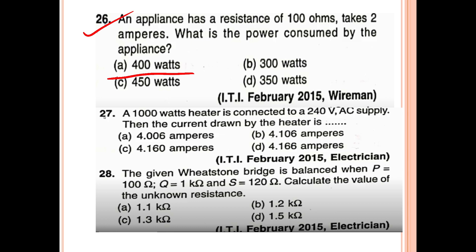27th question: A heater of 1000 watt is connected to a 240 volt AC supply. What is the current drawn by the heater? The answer is current equals P divided by V.